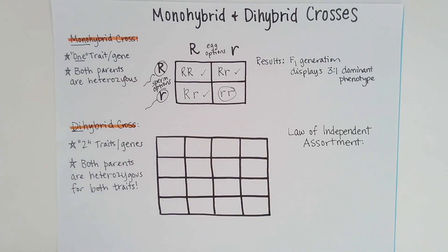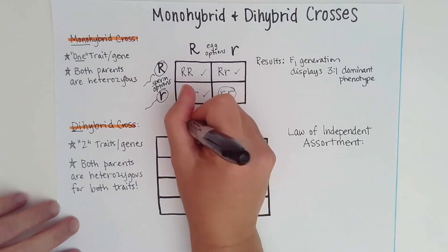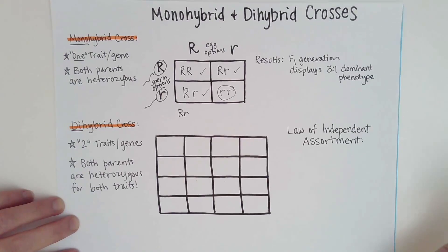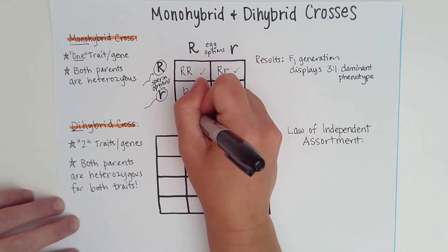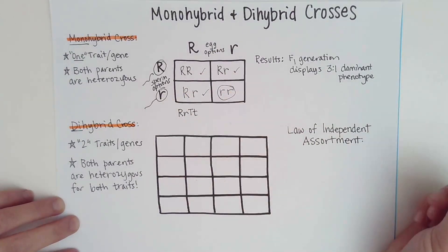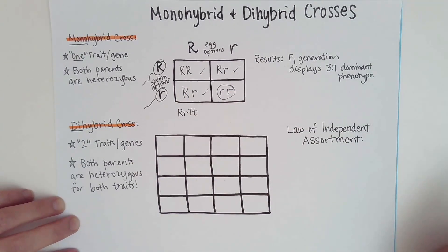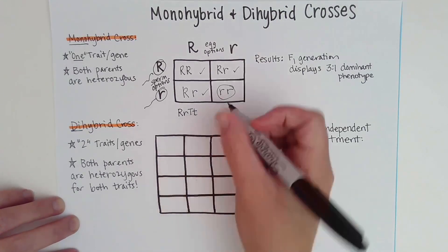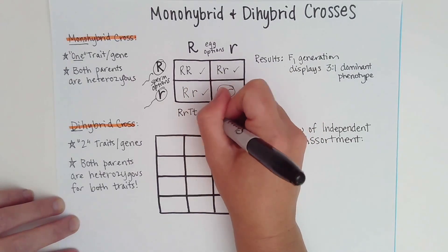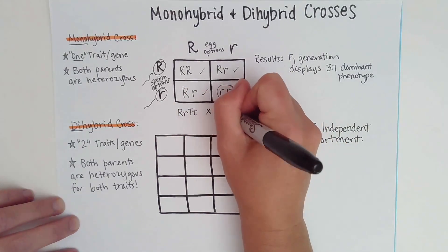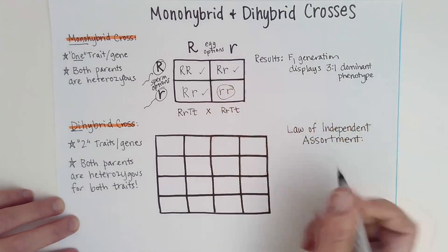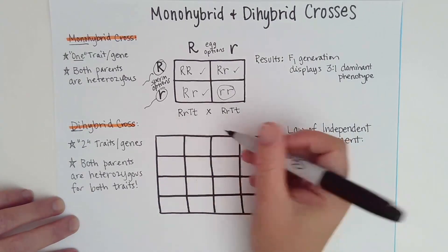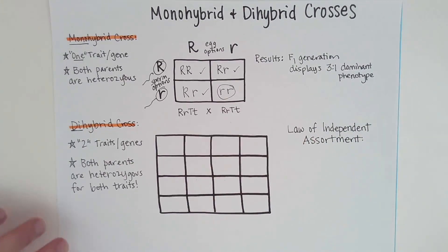So parent number one would be heterozygous for trait one — let's say seed shape (round seeds) — and also heterozygous for a second trait, like tall or short pea plants. Parent number one would be round-seeded and tall, heterozygous for both, then crossed with another parent that is the same. So both parents would have the same phenotype and genotype: round-seeded and tall.